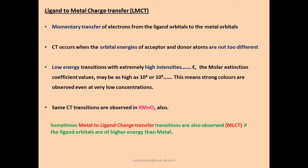The reverse case — metal to ligand charge transfer (MLCT) — also exists. In MLCT, the acceptor orbitals are more ligand-like in character and accept electron density from orbitals that are more metal-like. There is a temporary, momentary electron jump from metal-like orbitals to ligand-like orbitals, and the electrons return to their original ground state, amounting to an electronic transition.